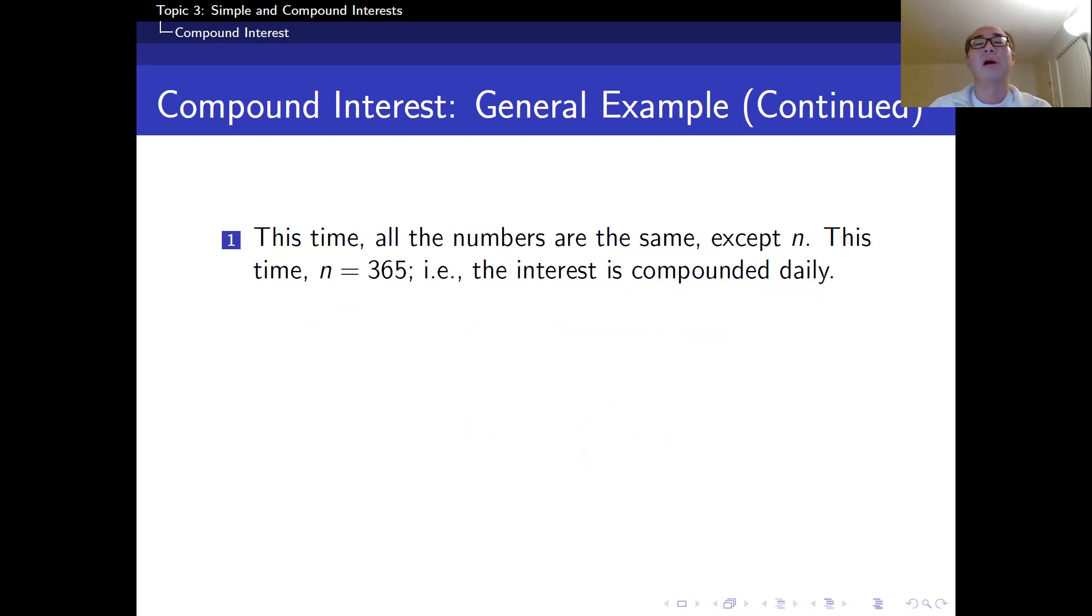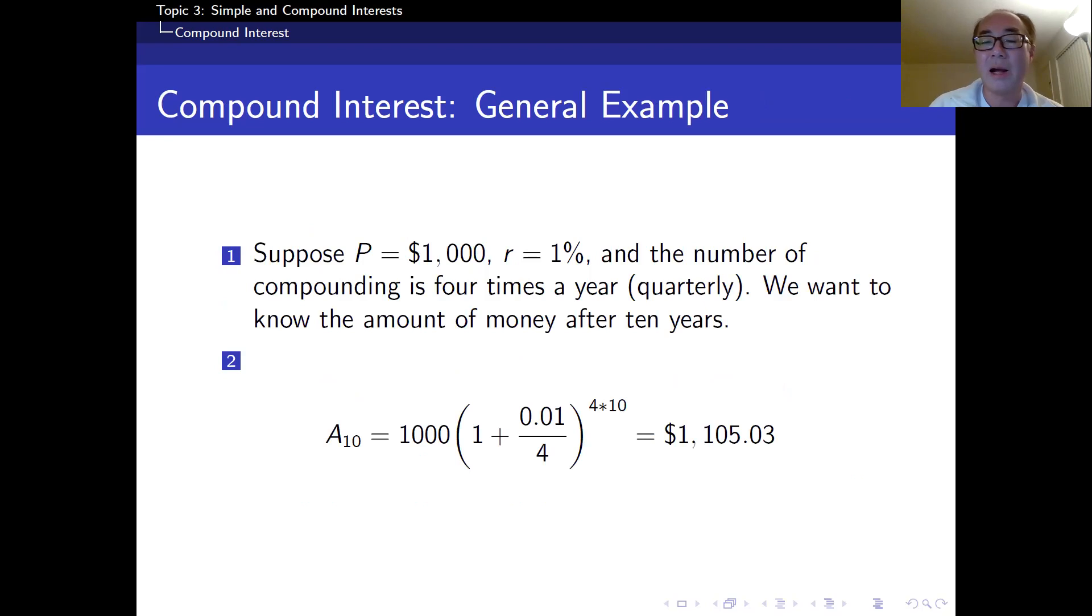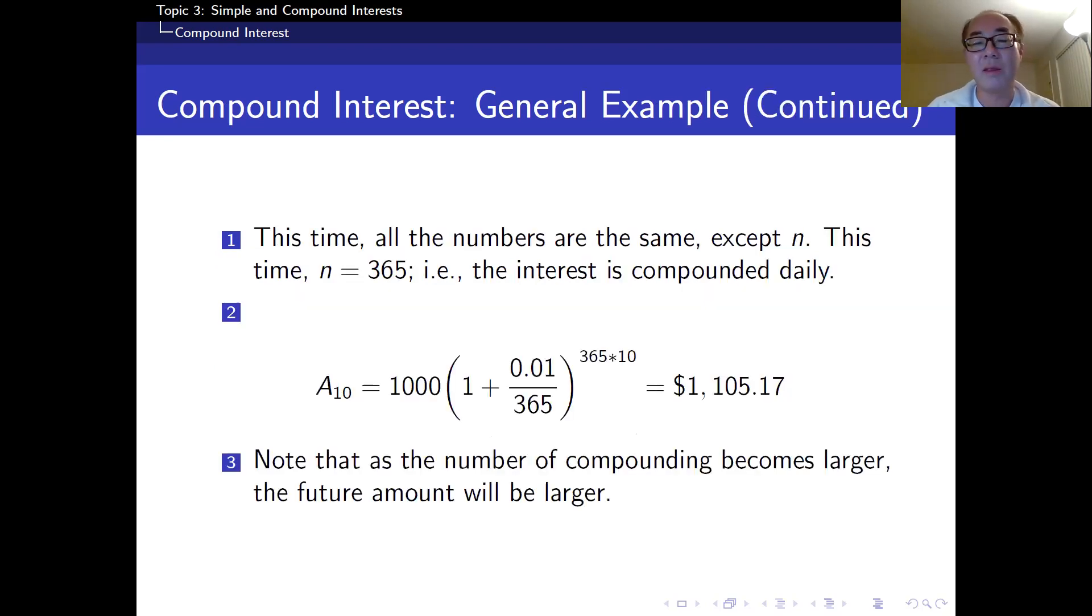Now, here's another example. All the numbers are the same except N. This time N is equal to 365. So the interest is compounded daily. So I just change N to 365 and if I calculate this, 10 years later, I get $1,105.17. Because interest is small, so there may not be a clear difference, but look at this. Previously, I have $0.03 here, but this time I have $0.17. So, as the number of compounding becomes larger, the future amount will be larger. That's a general observation.